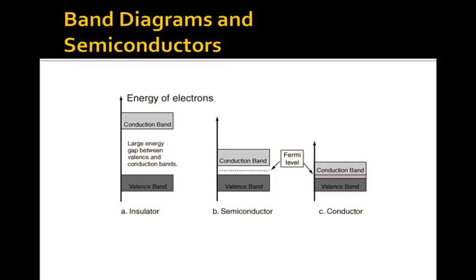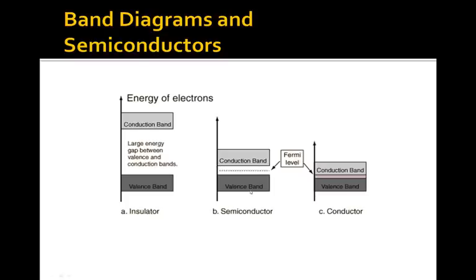So that's the distinction between conductors, insulators, and semiconductors. Now that we've covered that, we can move on to discuss specific circuit quantities including voltage, current, resistance, and power.